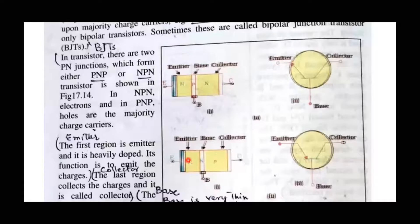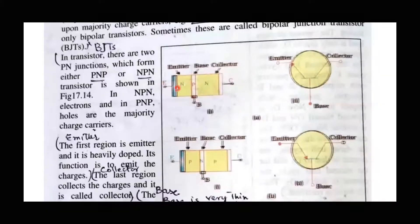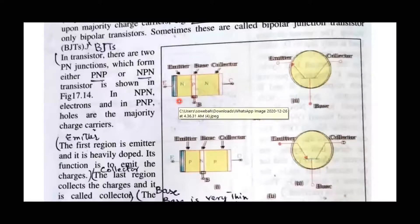If you have a P-type emitter, you keep the base N-type so that it attracts the charge carriers. The emitter and collector have opposite doping relative to the base. So the emitter ejects carriers into the thin base, and those carriers are then attracted by the collector, which has opposite polarity to the base.